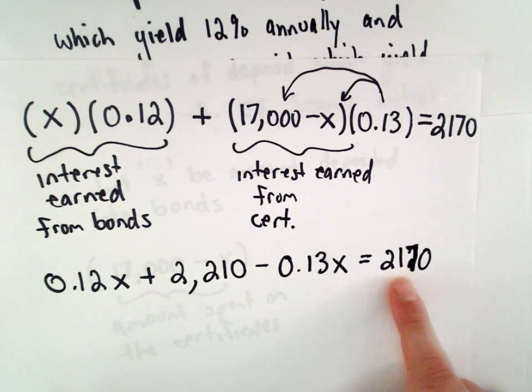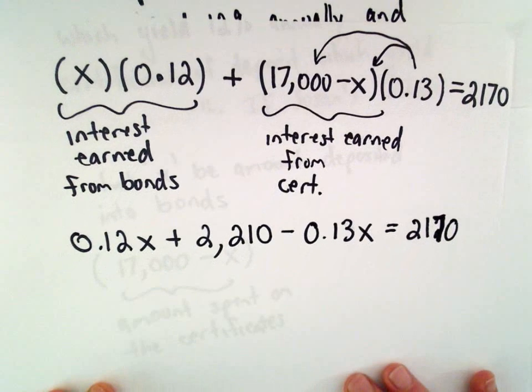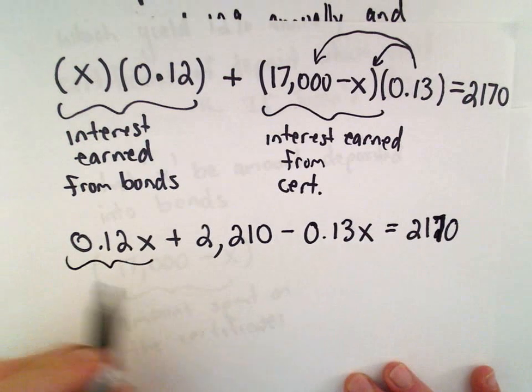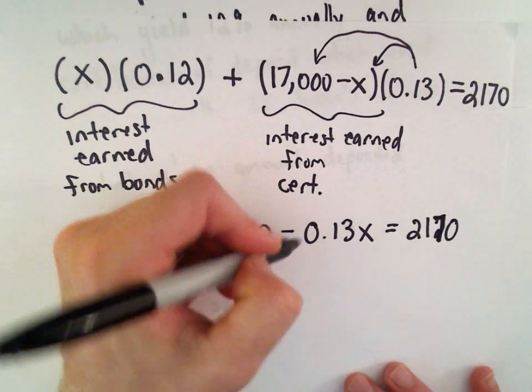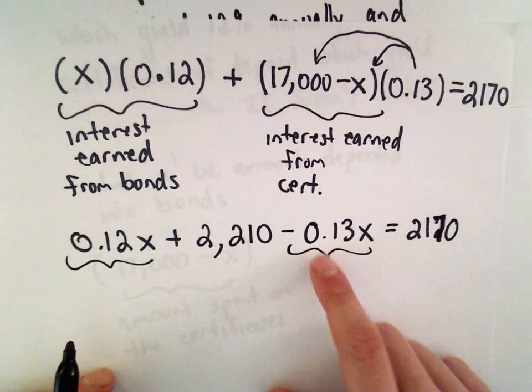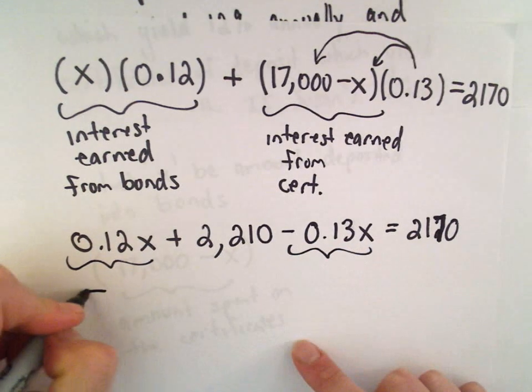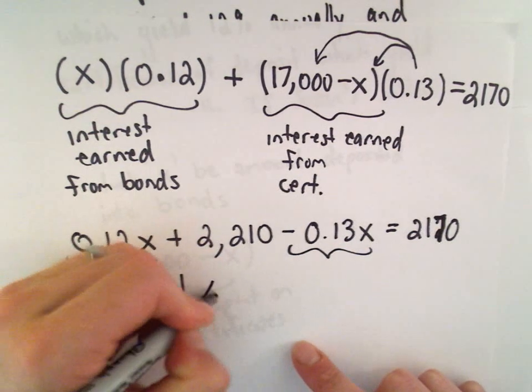That's going to equal 2,170. Now, still combining like terms. If we combine 0.12X and subtract 0.13X, that's going to leave us with negative 0.01X.